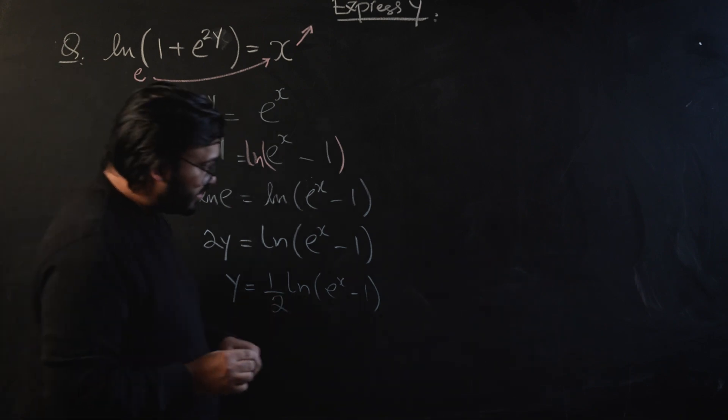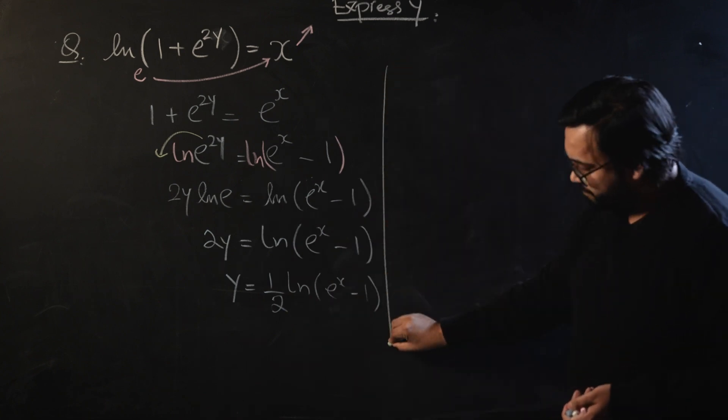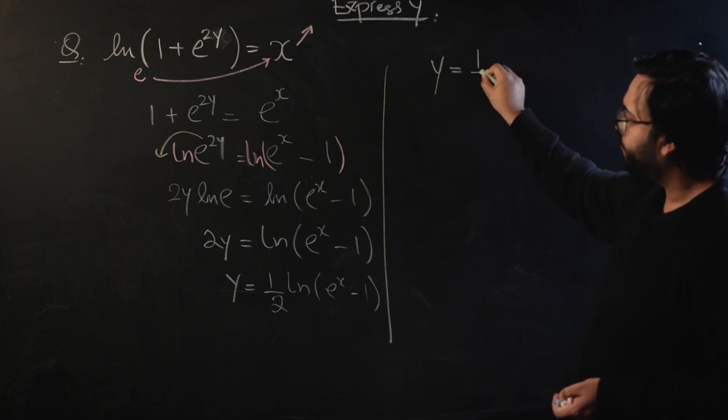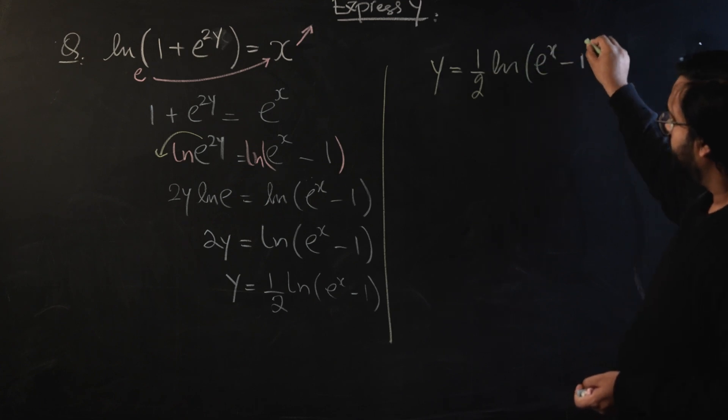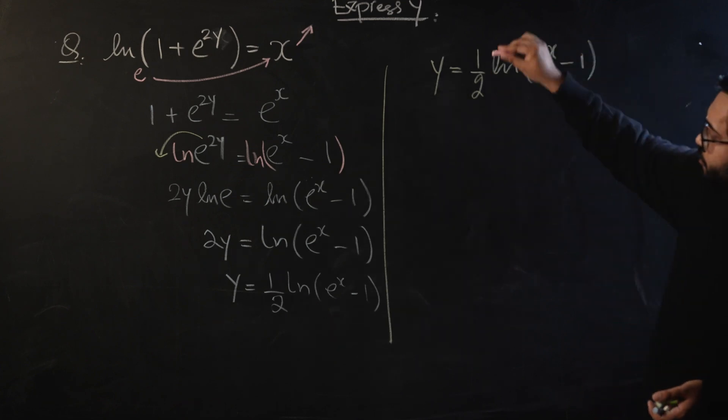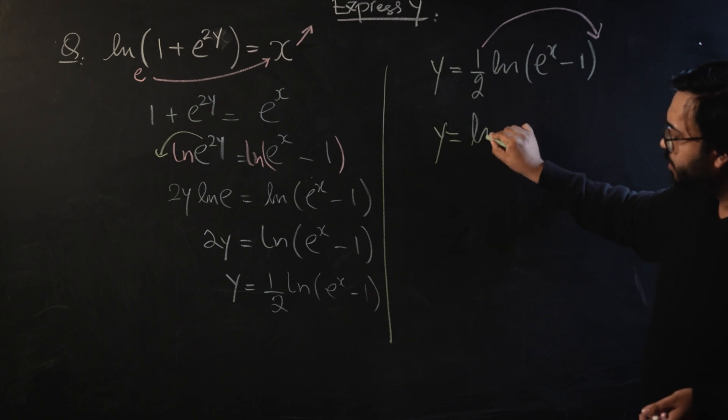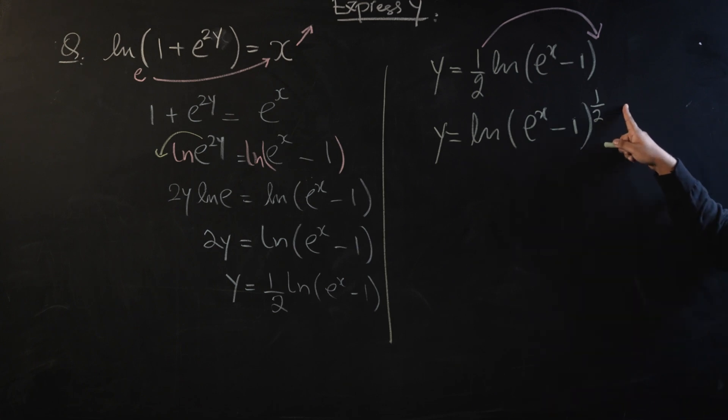So this is the final answer. There's one more equivalent form that is acceptable for this answer. I'll just show you and we can reach there in a couple of steps. For instance, if somebody solves it a little bit further, they can shift this 1 over 2 to the power using the power rule in logarithms and they can end up with a term like log of e raised to power x minus 1 to the power 1 by 2.